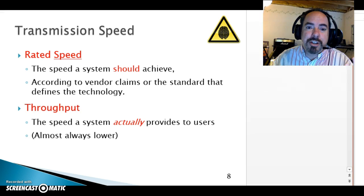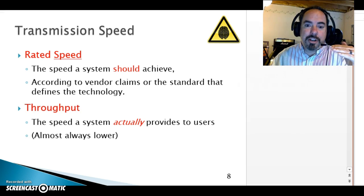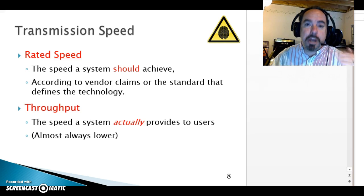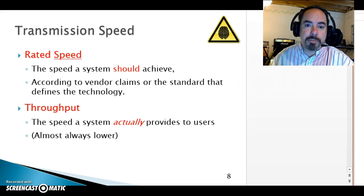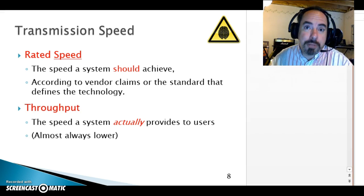Rated speed is what you're paying for — that's the maximum you're supposed to be getting from your ISP or on the LAN side. Throughput is reality — what you're actually getting. You want to measure your throughput to see how it compares with your rated speed. That's what the speed test in the first assignment is all about: comparing actual throughput with your rated speed. If there's a big difference, you should call your ISP and complain, because now you have evidence you're not getting what you pay for.